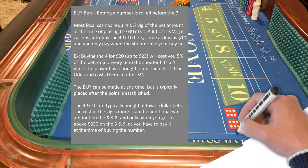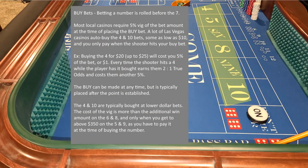Buy bets — betting a number is rolled before the seven. Most local casinos require a five percent vig of the bet amount at the time of placing the buy bet. A lot of Las Vegas casinos auto-buy the four and ten bets, some as low as ten dollars, and you only pay the vig when the shooter hits your buy bet. For example, buying the four for twenty to twenty-five dollars will cost you five percent — one dollar. Every time the shooter hits a four it earns two to one true odds and costs another five percent. The four and ten are typically bought at lower dollar bets, as the vig cost exceeds the additional win on the six and eight, and only becomes favorable above three hundred fifty dollars on the five and nine.